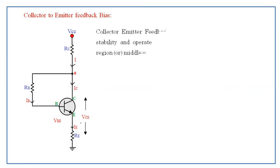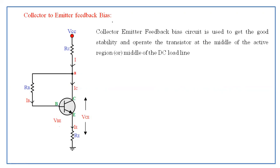The collector to emitter feedback bias circuit is used to get good stability and operate the transistor at the middle of the active region, or middle of the DC load line. By using this biasing circuit we can maintain the operating point at the middle of the active region, so the transistor will become stable.